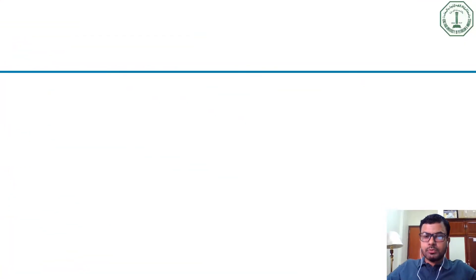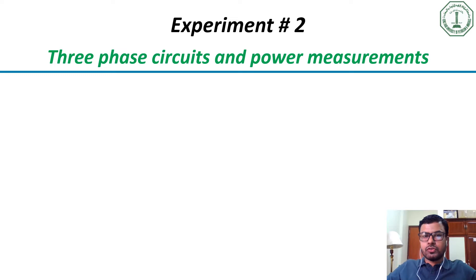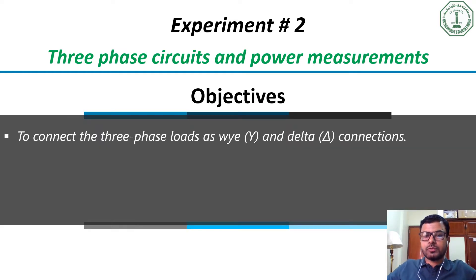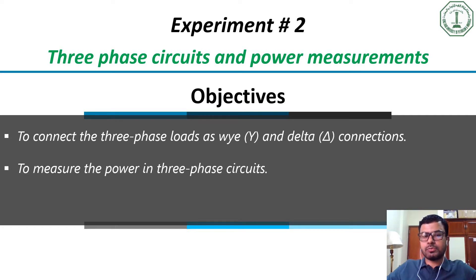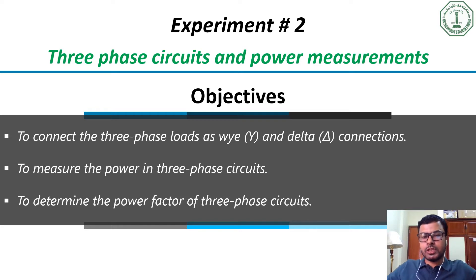Our second experiment is about three-phase circuits and power measurements. The first objective is to connect the three-phase loads as Y and delta connections. Our second objective is to measure the power in three-phase circuits. Finally, our third objective is to determine the power factor in three-phase circuits.